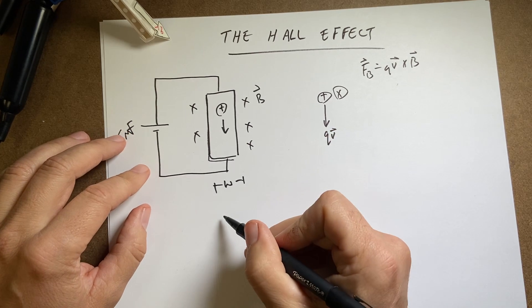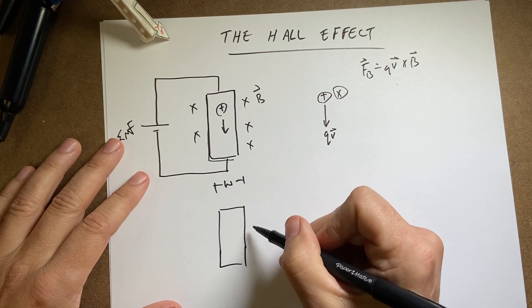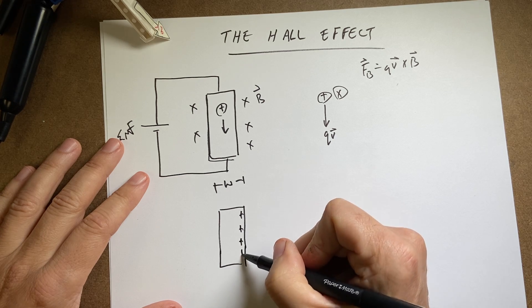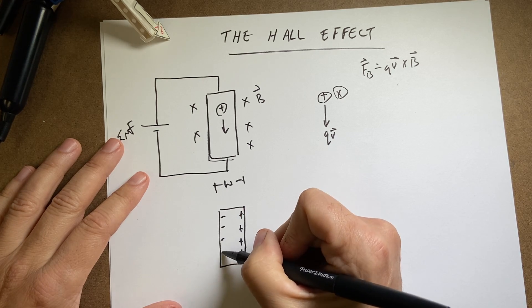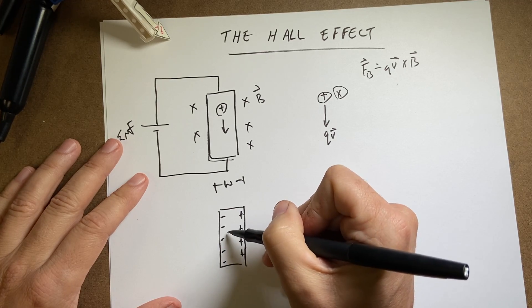So what's going to happen over time is that my metal is going to look like this. I'm going to get positive charges on this side. They're pushed over here, and that's going to leave negative charge over there. Now there's going to be an electric field inside going that way.